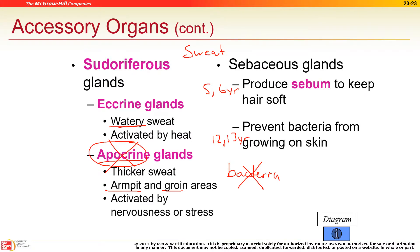Sebaceous glands are oil glands. When you shampoo, you strip your hair of its natural oils — that's why you use conditioner afterward to put those oils back. Now you know why you use both shampoo and conditioner.